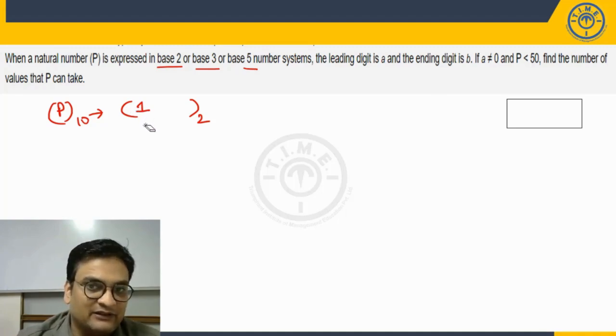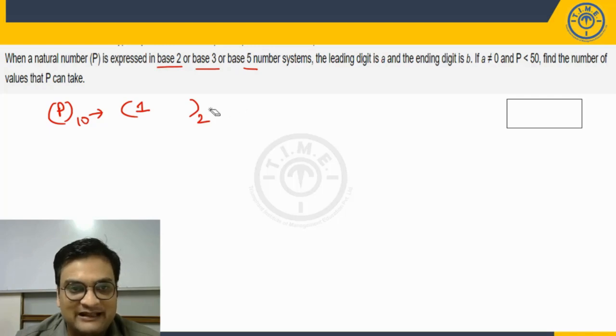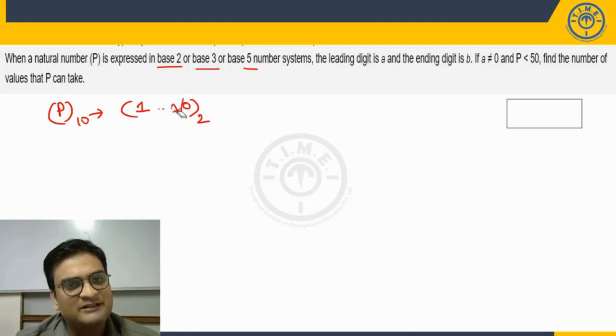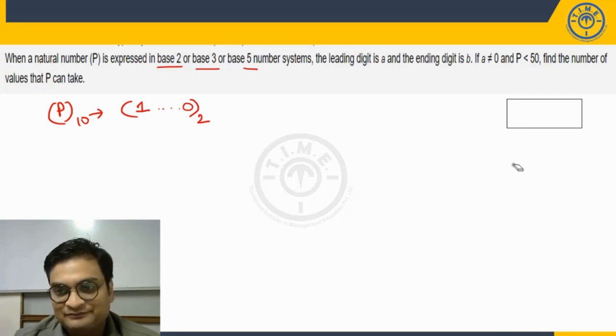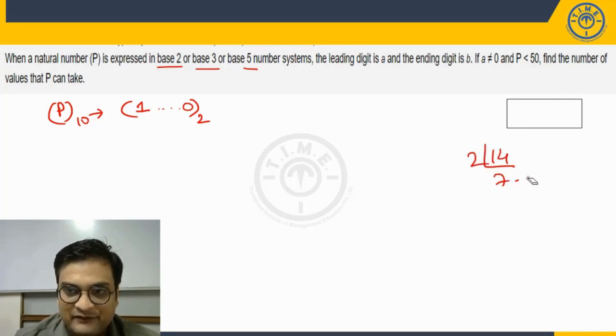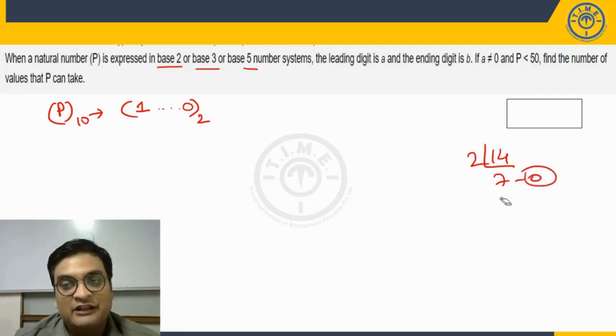However, the last digit can be either 0 or 1. When will it be 0? When will it be 1? If you want the units digit, the last digit to be 0, please notice that the given number P has to be a multiple of 2, because only when the number is a multiple of 2, when you convert it into binary, you will get the last digit as 0. If it is not a multiple of 2, you will get the last digit as 1.